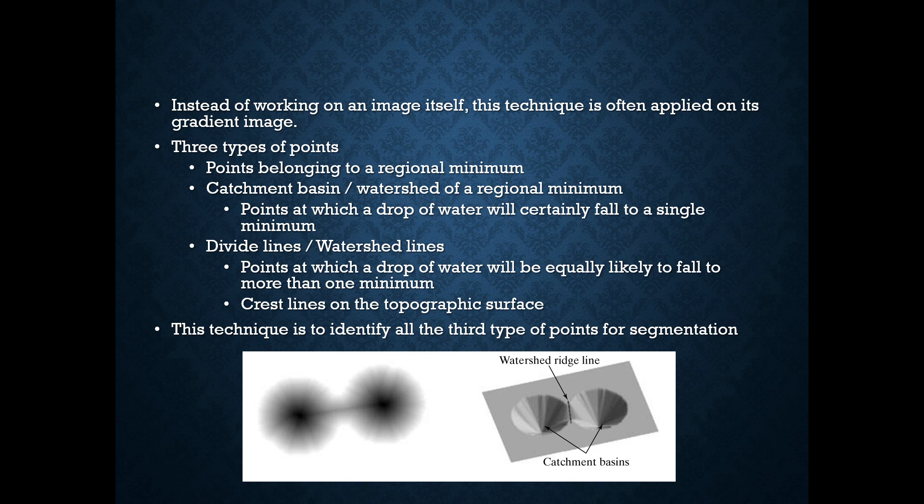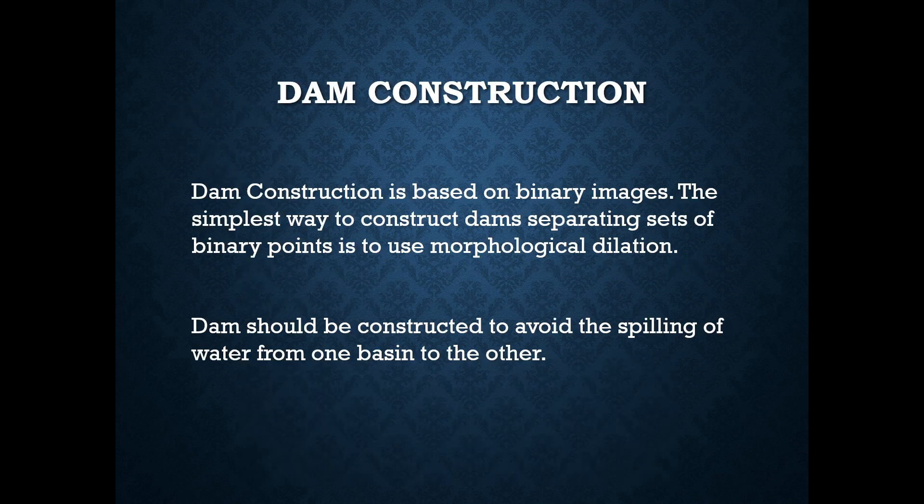They are also called crest lines on the topographic surface. This technique is to identify all the third type of points for segmentation. In this image, we can see the catchment basins and the watershed ridge line exactly in the middle of the catchment basins.